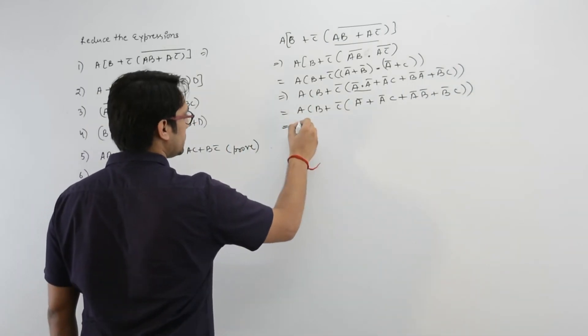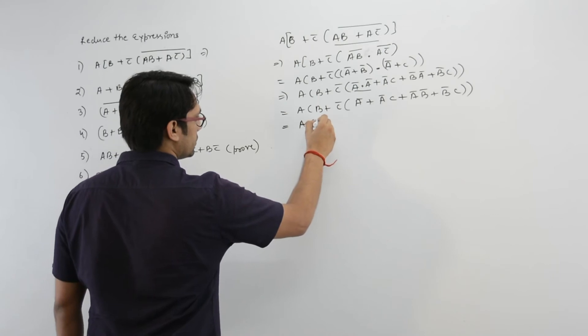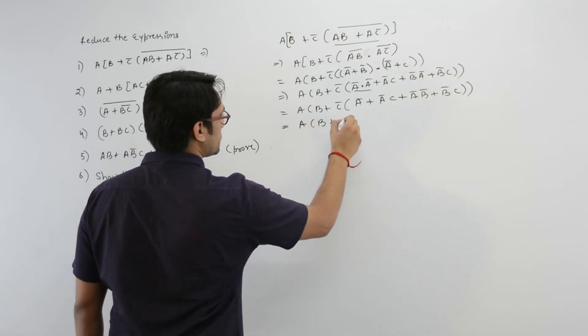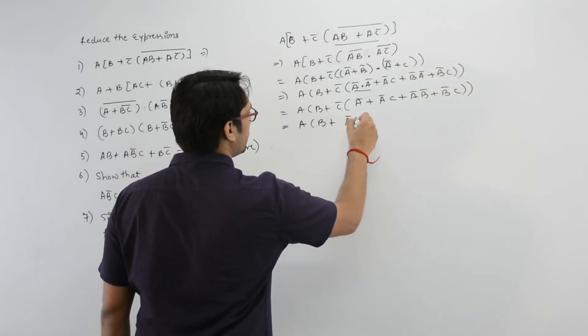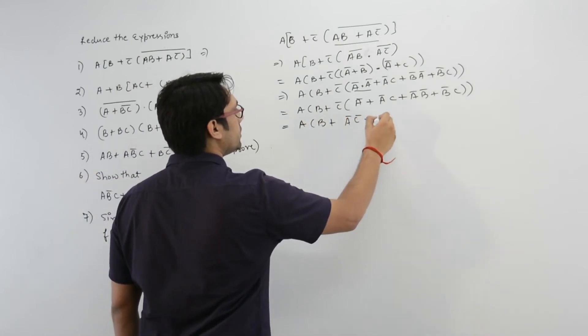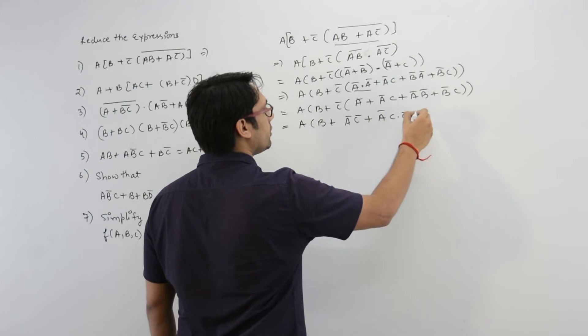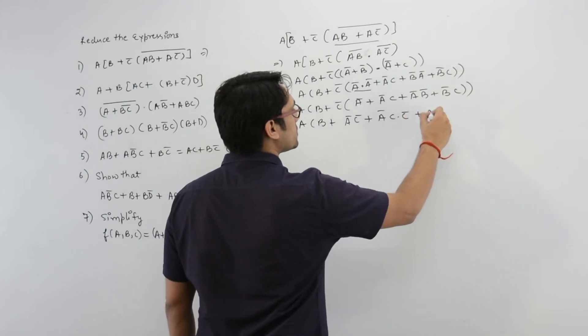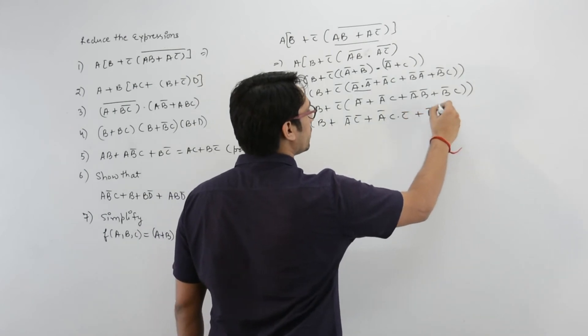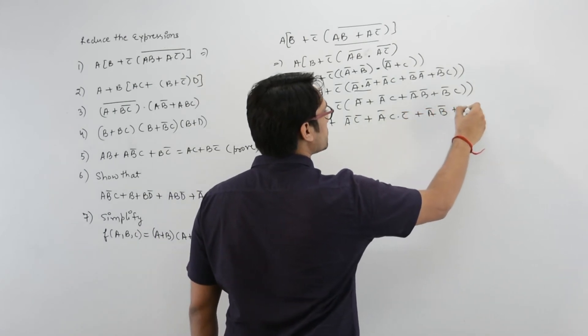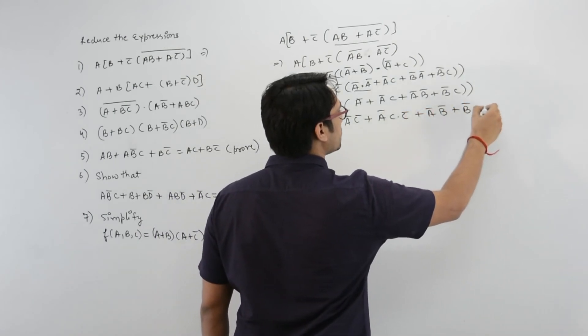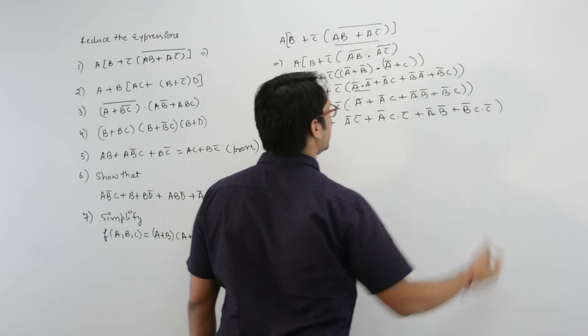Now expand this. It is B plus a complement C complement, plus a complement C dot C complement, plus a complement b complement, plus b complement C dot C complement.